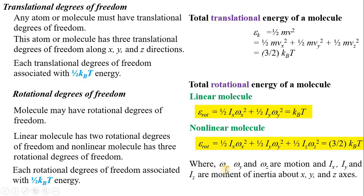Here, omega x, omega y, and omega z are angular velocities, and I_x, I_y, and I_z are the moments of inertia about the x, y, and z axes respectively.